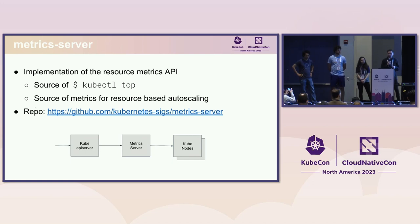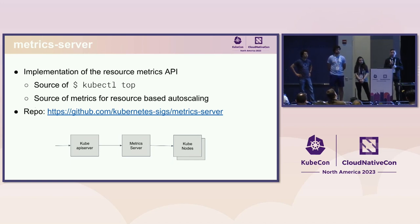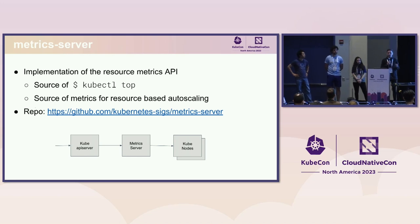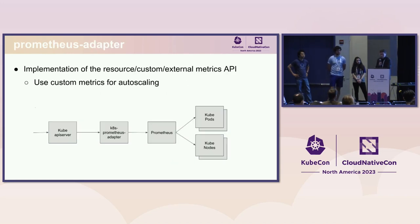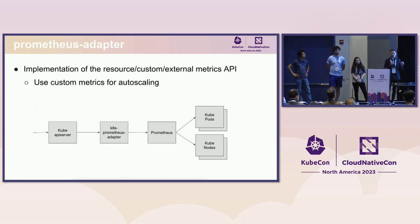The metrics come from kubelet — you have one instance on each of your nodes — and metric server scrapes that and exposes it via the kube API server to any application. Metric server is very lightweight, has a dedicated purpose, and only supports resource usage autoscaling.